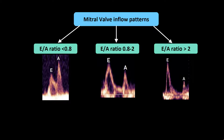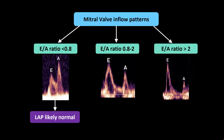If for whatever reason you cannot accurately perform tissue Doppler to obtain an E-prime velocity, the E over A ratio can also give you some insight into LAP. As LAP increases, E-velocity also increases. Therefore, a low E-to-A ratio — particularly one less than 0.8 — is usually indicative of a normal left atrial pressure. And a high E-to-A ratio — particularly greater than 2 — is usually indicative of an elevated left atrial pressure.